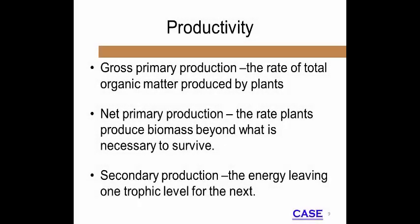Productivity is measured in terms of gross, net, and secondary. Gross productivity is all organic matter produced by plants. Net productivity is the biomass produced beyond what plants need for survival. Secondary production refers to the amount of energy that moves to the next trophic level.